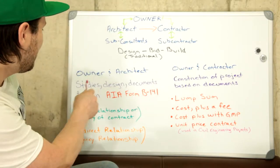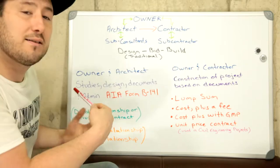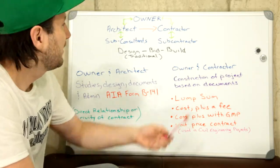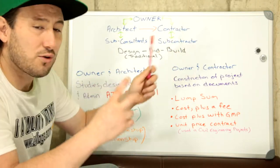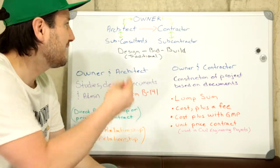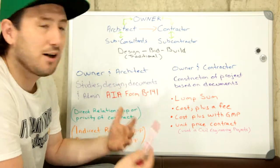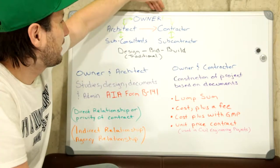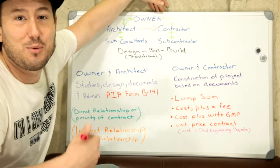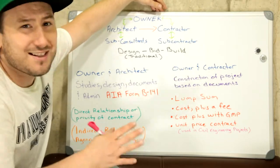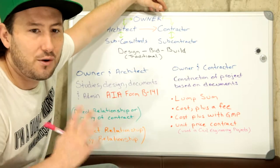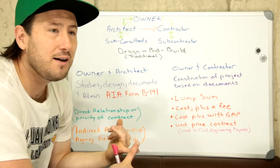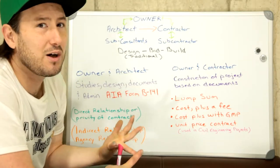After the documents have been completed, the project will go out to tender. Contractors will bid the job, and the winning contractor — usually the one with the lowest price — will enter into a contract. That's not necessarily always the case because there are many qualifications, but as long as they qualify and have the best price, they will get that contract.